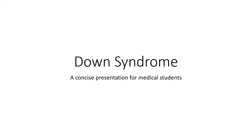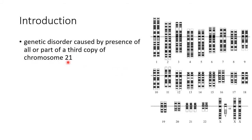Hello guys, this is Indian Medico and in this video we are going to see about Down syndrome. Down syndrome is a genetic disorder caused by the presence of all or part of a third copy of chromosome 21. As you can see in this picture, there are three copies of chromosome 21.